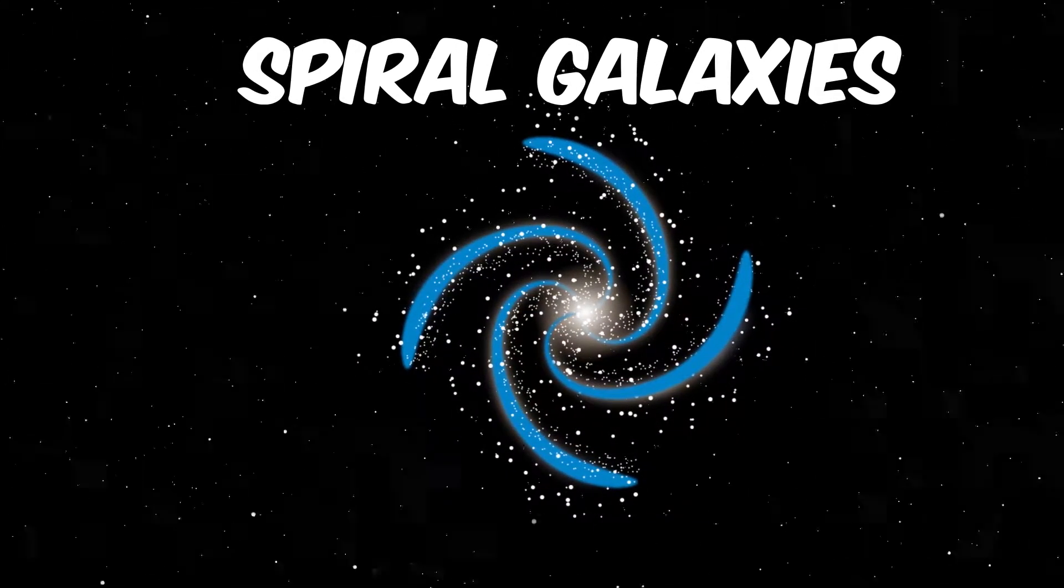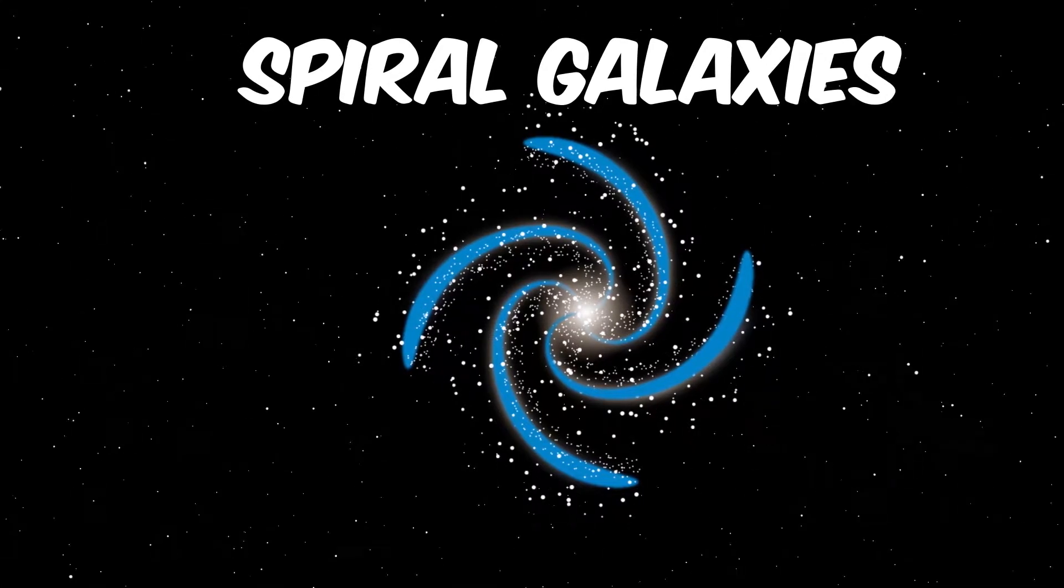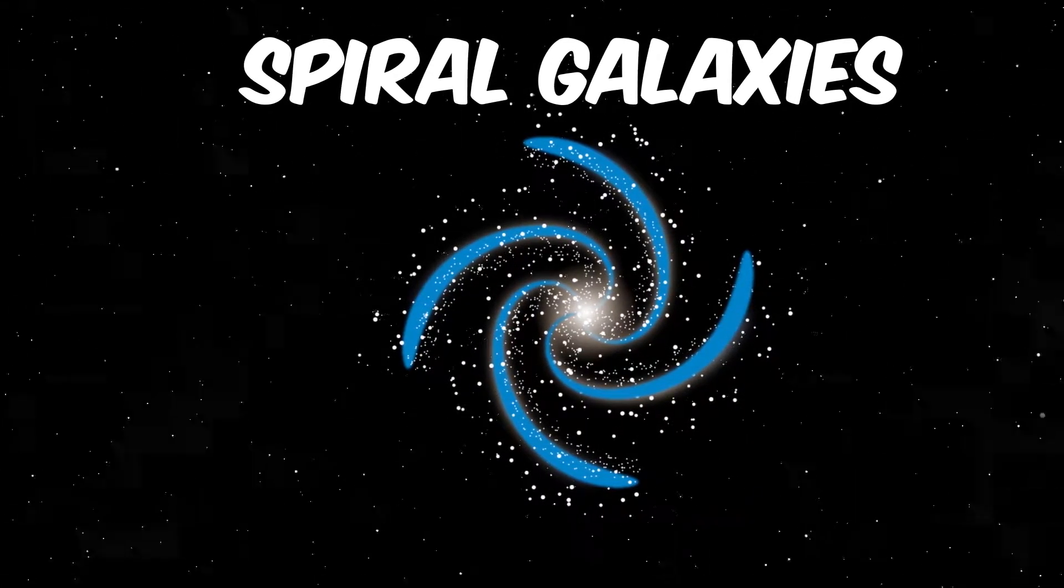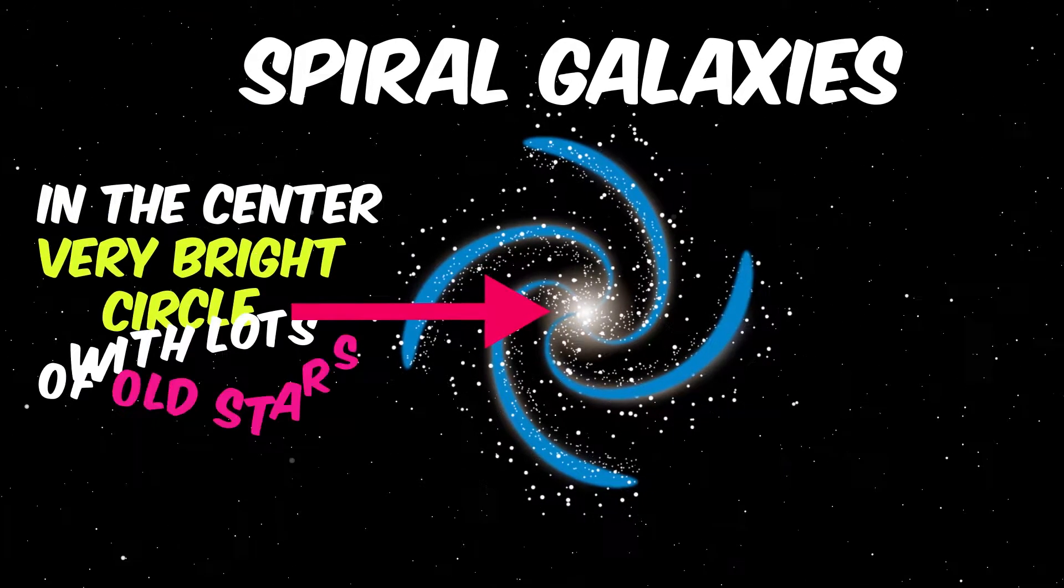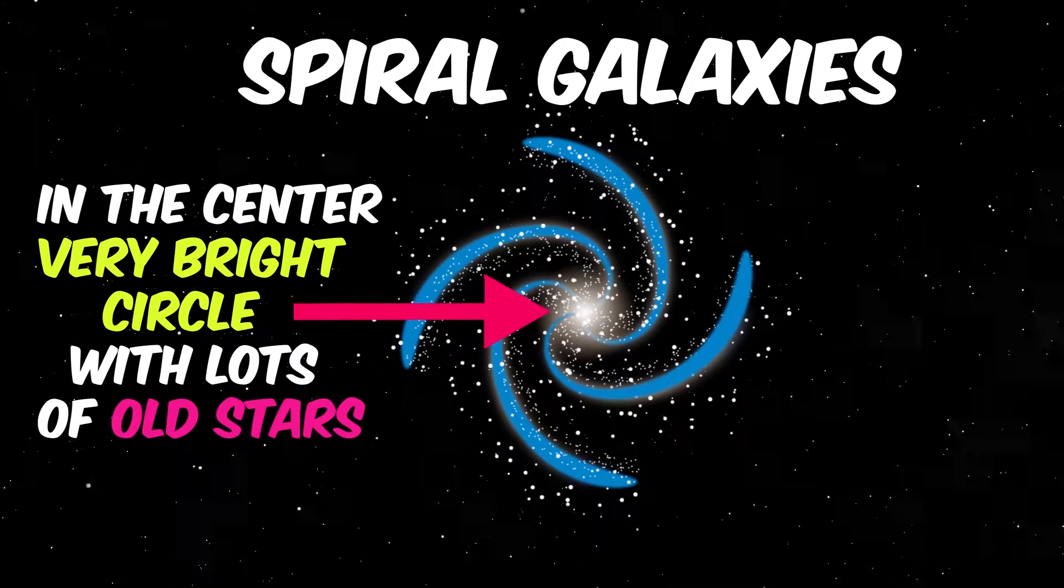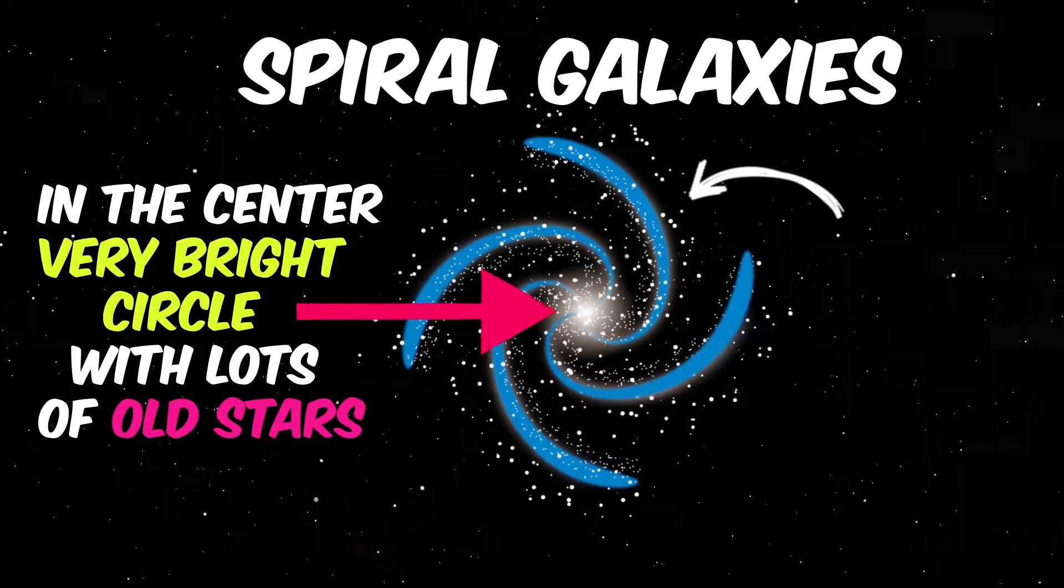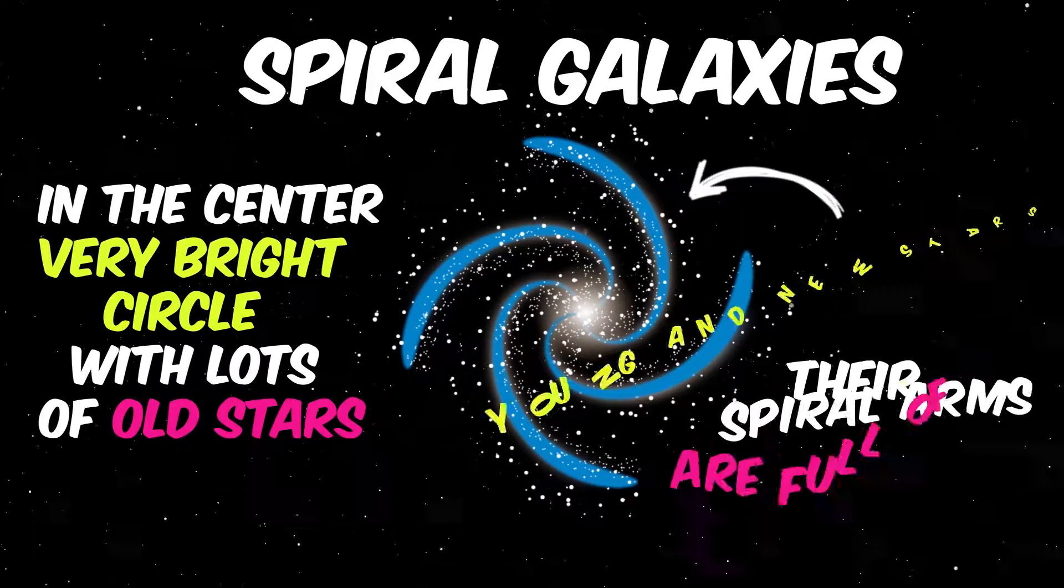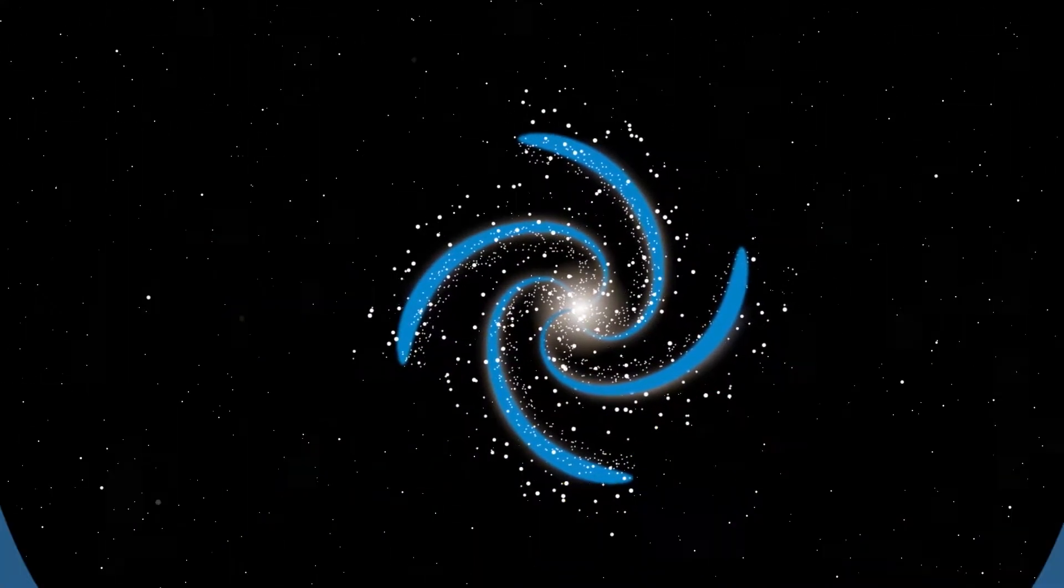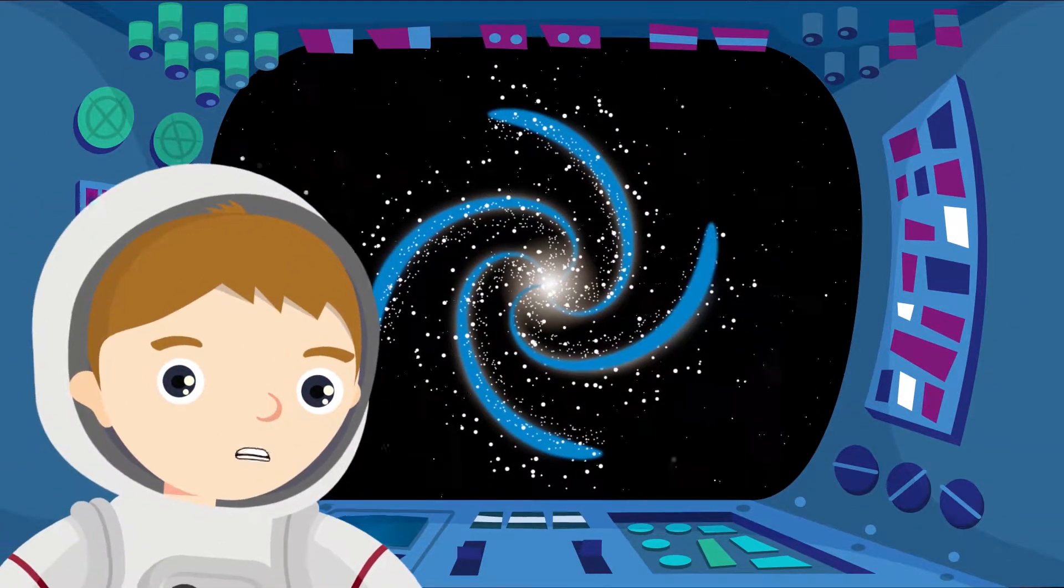Spiral galaxies, like the Milky Way. The main feature of spiral galaxies is their spiral shape. At their centre is a very bright circle with lots of old stars. Yet, their spiral arms are full of young and new stars. How awesome is that?